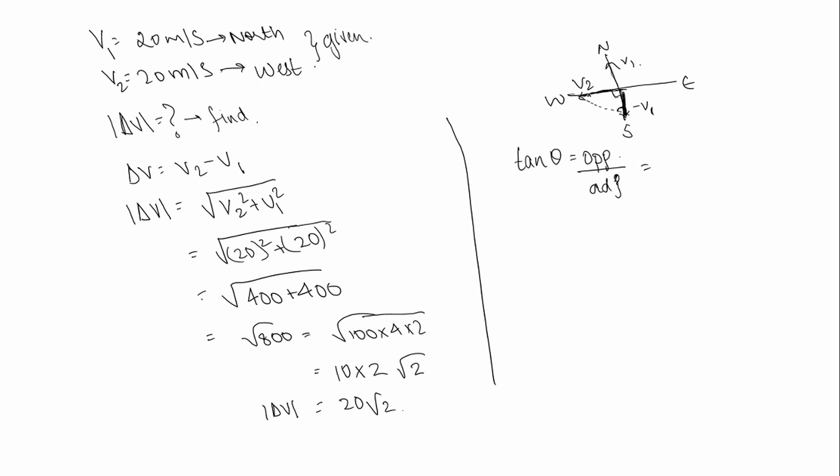The opposite side to theta is v2, and the adjacent side to theta is v1. So v2 is 20 and v1 is also 20, so tan theta equals 1, therefore theta is 45 degrees.